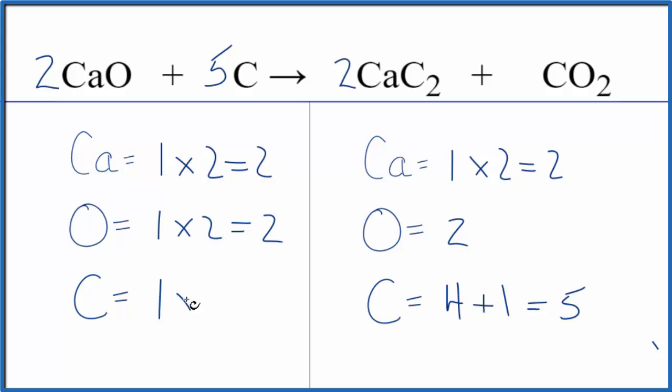This equation is balanced. So what makes this equation challenging is, first, we have 2 carbons in the product, so you've got to count all of those up. And then the other thing is to recognize that carbon is by itself, so leave that to last to do the balancing.